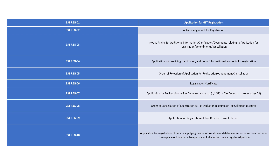GST REG-05 is the order of rejection of application for registration, amendment, and cancellation. GST REG-06 is for the registration certificate issued upon successful registration.